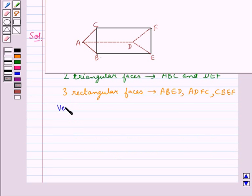Next, let's name the vertices of this triangular prism. It has six vertices in all: A, B, C, D, E, and F.